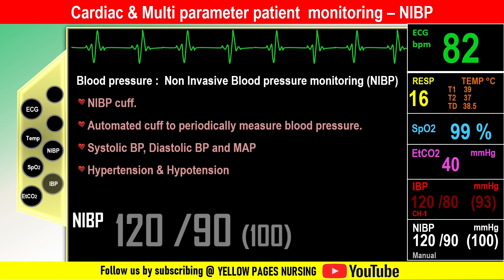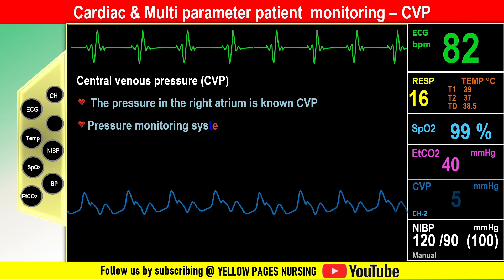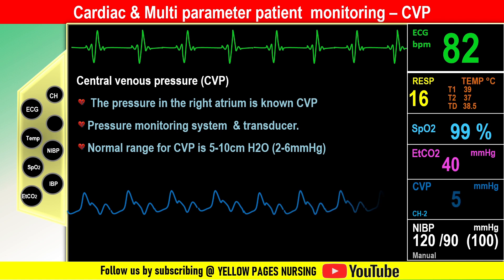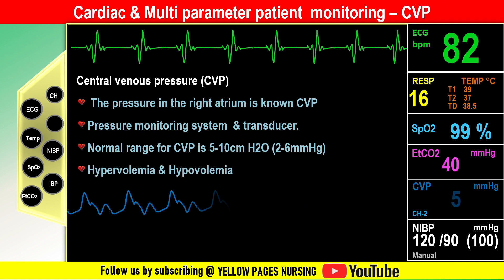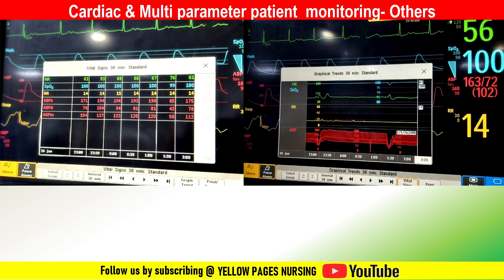Central venous pressure is the pressure in the right atrium. The proximal end of the central venous catheter is connected to a pressure monitoring system including a transducer, which converts and displays the CVP readings. Normal range for CVP is 5–10 cmH2O (2–6 mmHg), measured from the mid-axillary line at the fourth intercostal space. This helps identify hyper- or hypovolemia. Nursing considerations: regularly zero and calibrate the pressure monitoring system to maintain accuracy.